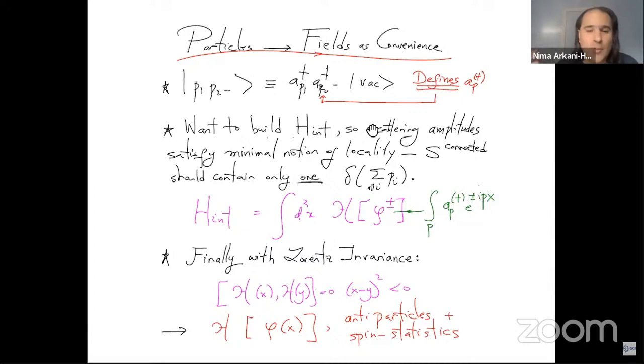in order for time evolution in one frame to actually give us the same answer for the S matrix is doing things in any different frame, we have to have the time orderings or the definition of the perturbative expansion of the S matrix don't matter, which forces that the Hamiltonian density should commute with itself outside the light cone. Which in turn tells you that the Hamiltonian density has to be built out of those particular combinations of five plus and five minus that we normally identify as relativistic quantum fields. Giving us a notion of anti-particles spin statistics and so on.